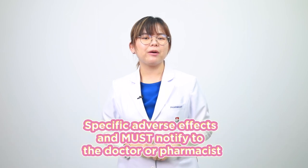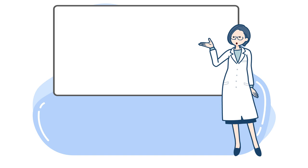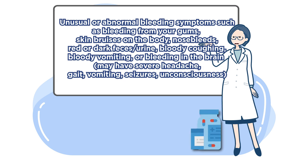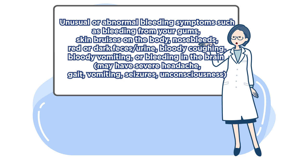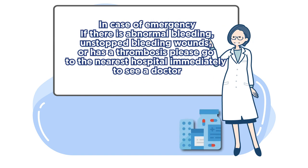When taking DOAC, you should watch for abnormal symptoms of bleeding and thrombosis. Signs of bleeding include: bleeding in the gum, coughing up blood, vomiting blood, and red or dark-colored urine. Signs of thrombosis or blood clotting may look like a stroke — symptoms include facial weakness, inability to speak, or blurred or double vision.